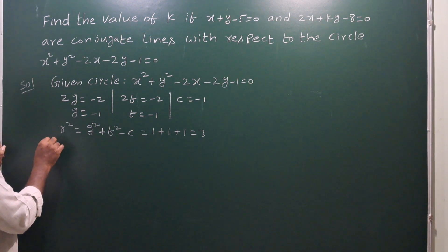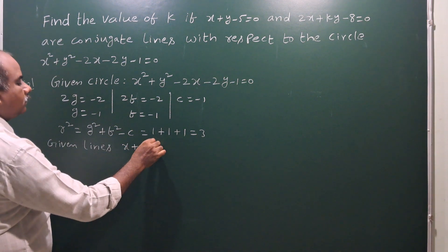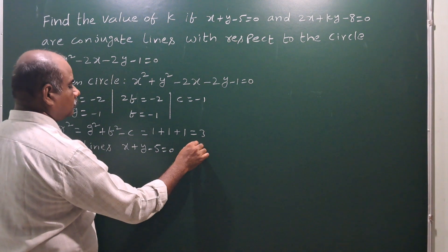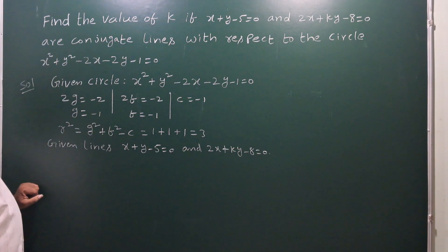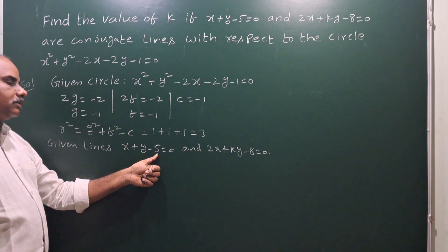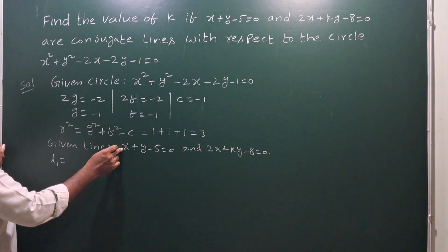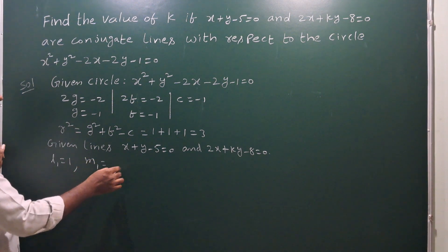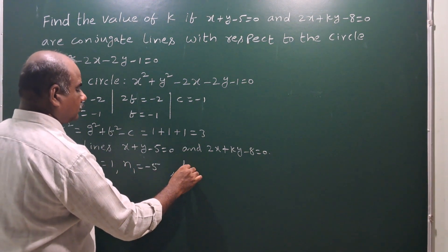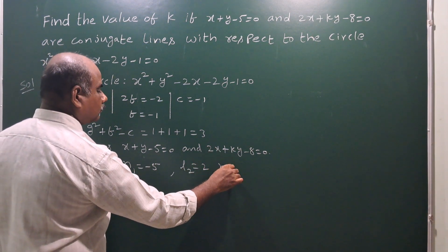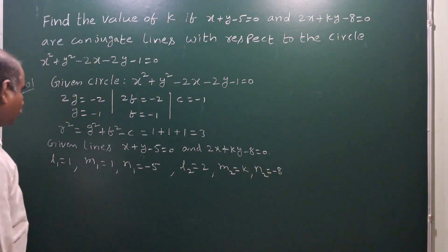Next, write the given straight lines. x plus y minus 5 is equal to 0, and 2x plus ky minus 8 is equal to 0. Comparing with l1x plus m1y plus n1 equals 0 and l2x plus m2y plus n2 equals 0: l1 equals 1, m1 equals 1, n1 equals minus 5. Then l2 equals 2, m2 equals k, n2 equals minus 8.